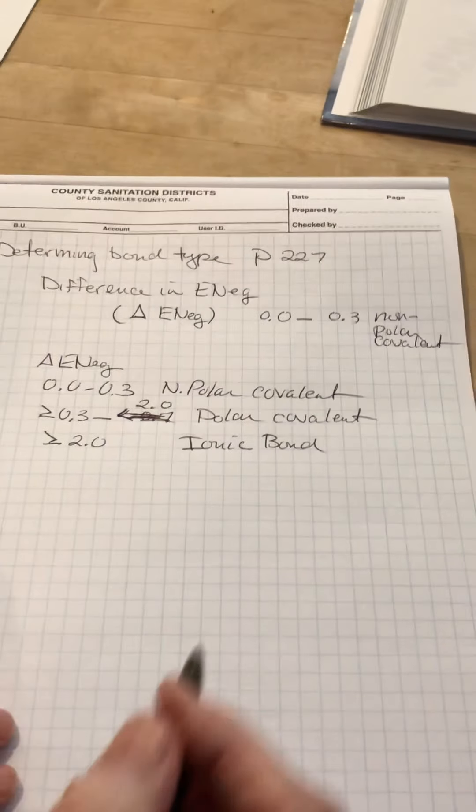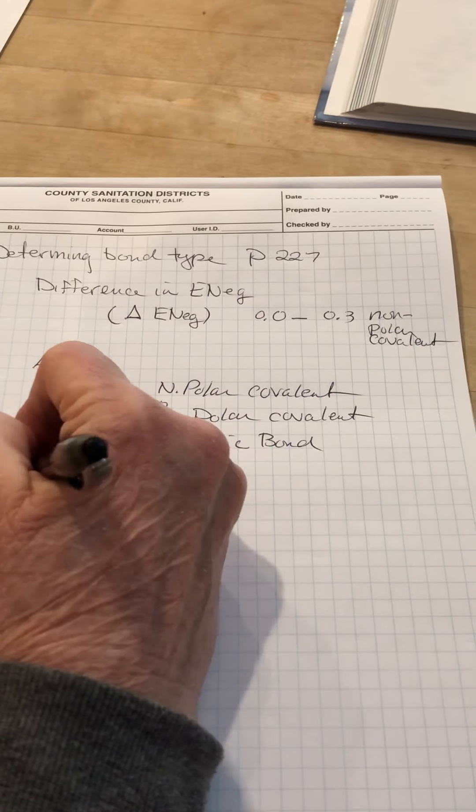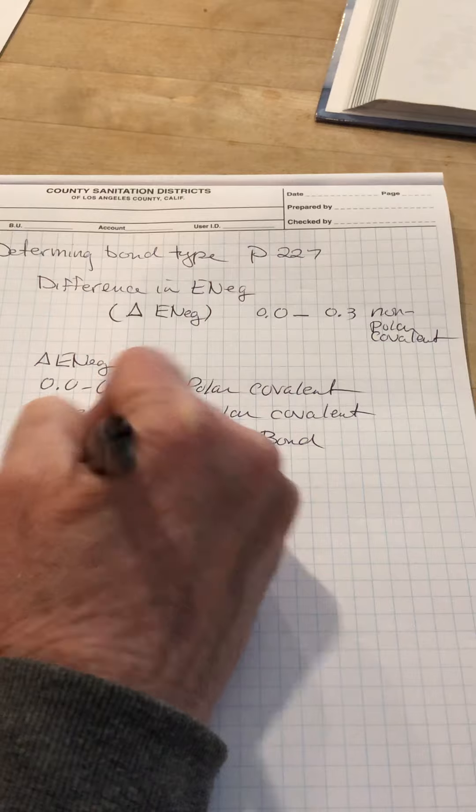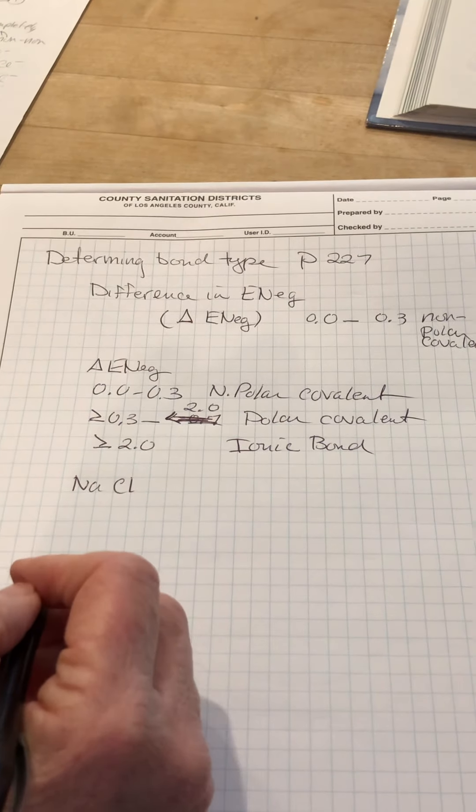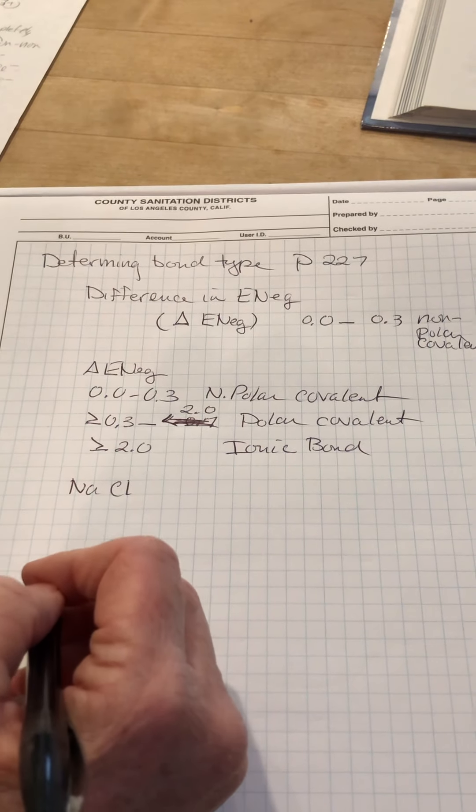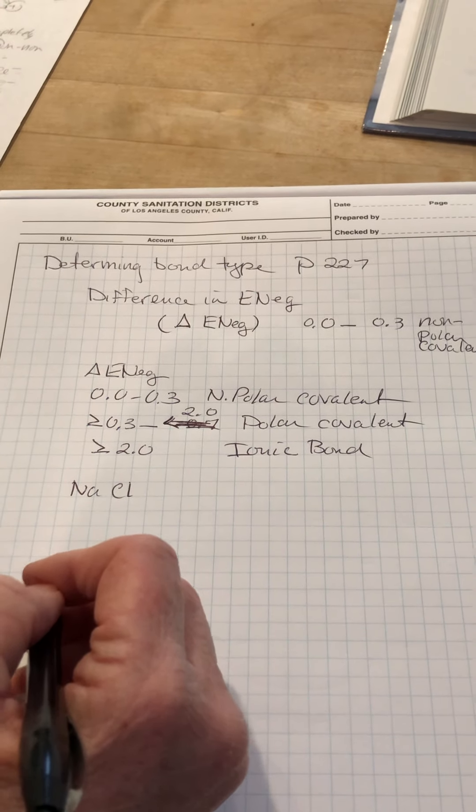So how do we do this? Say I want to look at sodium chloride, NaCl. We already used that as an example of an ionic bond. So I'm going to go to that table on page 227 and look at the electronegativity for sodium and chlorine.